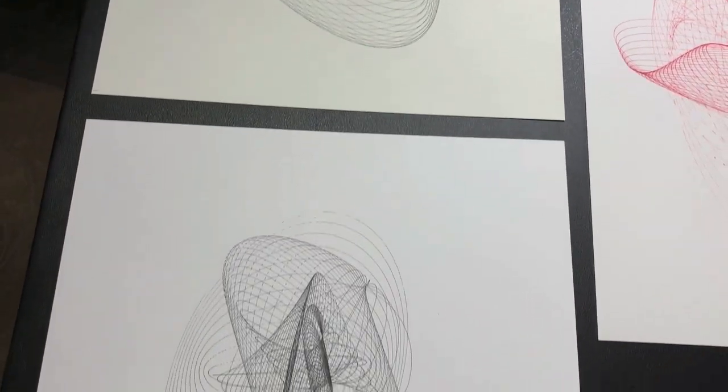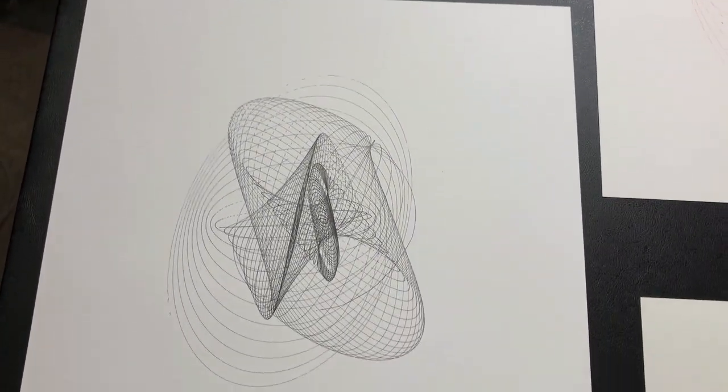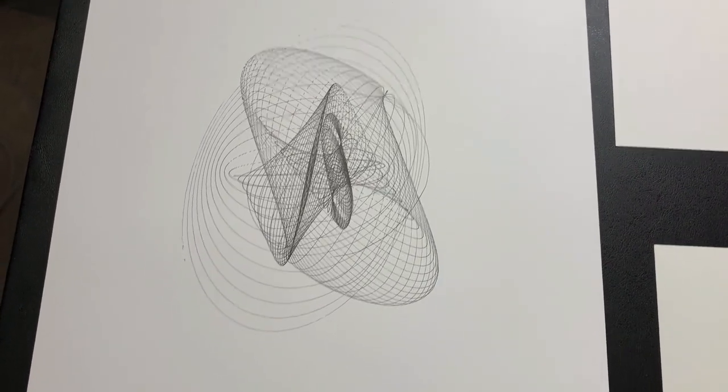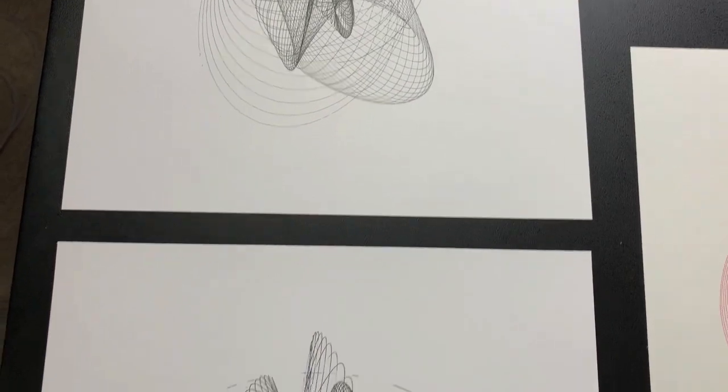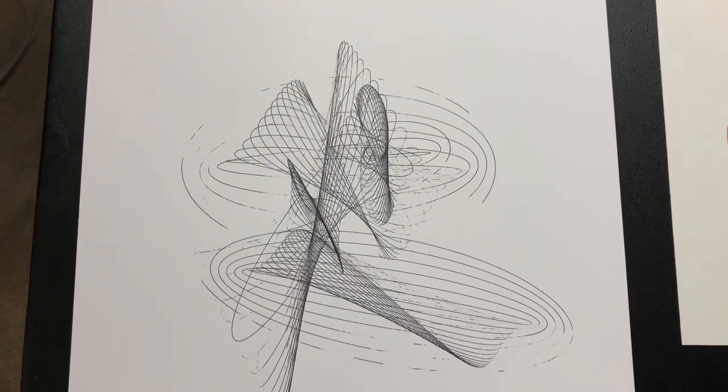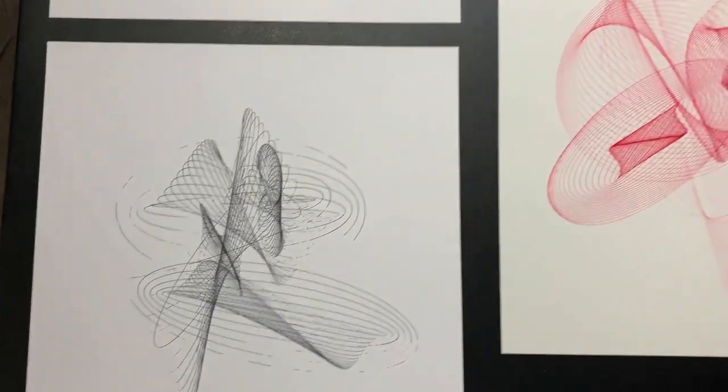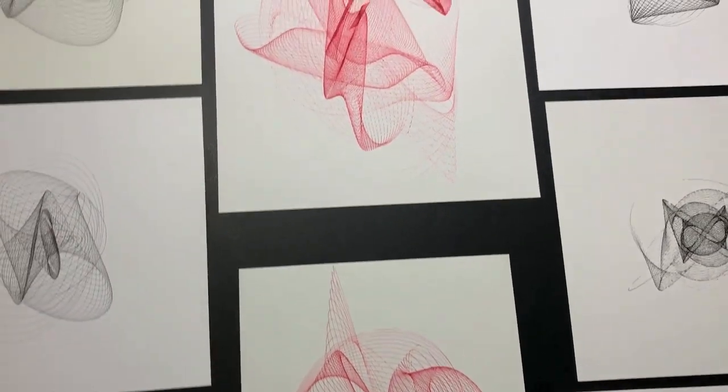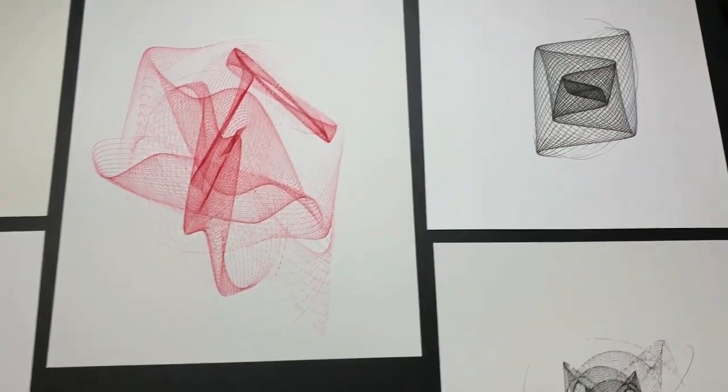When the weight goes more toward the back of the drawing arm you get a broken line effect like this one. I think that sometimes having a broken line effect produces a less mechanical look to your final image.